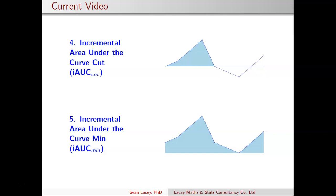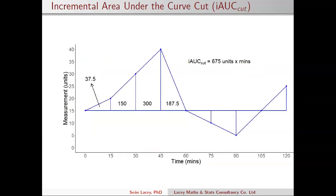I'm going to take some sample measurements and demonstrate the two calculations. The first one will look at everything above a baseline measurement. The baseline measurement in this case is 15 units — there's no specific context to this. Time is used as the x-axis, the horizontal axis, to work out the area, and these numbers are just sample measurements.